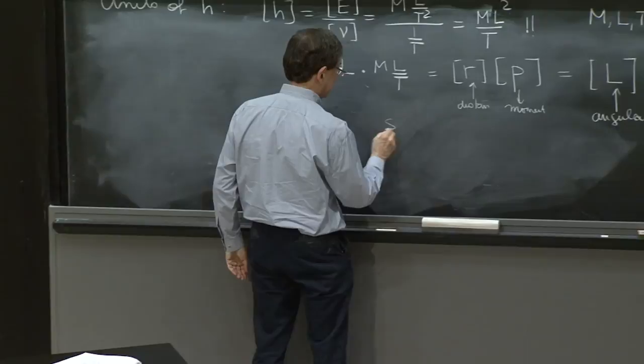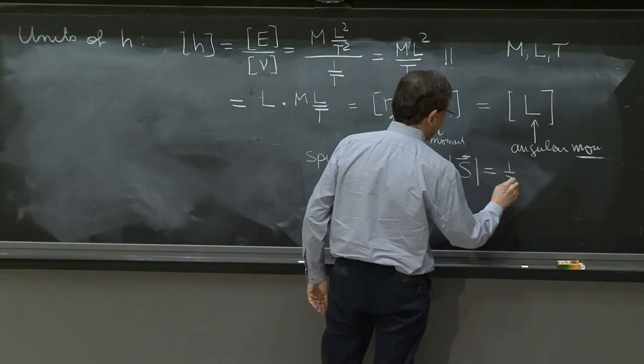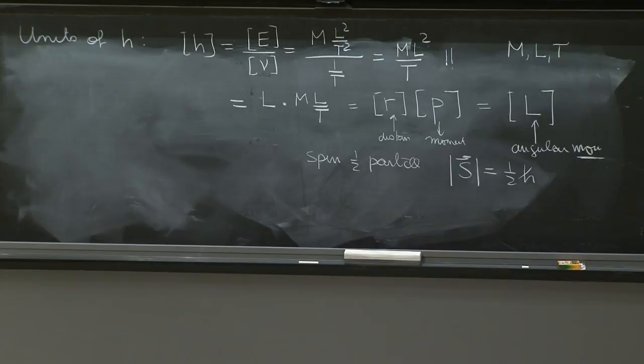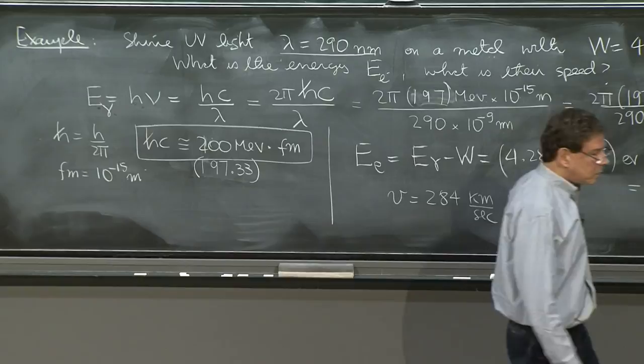Spin 1 half particle means that the magnitude of the intrinsic angular momentum is 1 half of h bar. h or h bar have the same units. They just differ by a 2 pi. Unfortunately, we have to be careful about that 2 pi. It affects numbers. Some formulas are nicer without the bar. Some formulas are less nice.